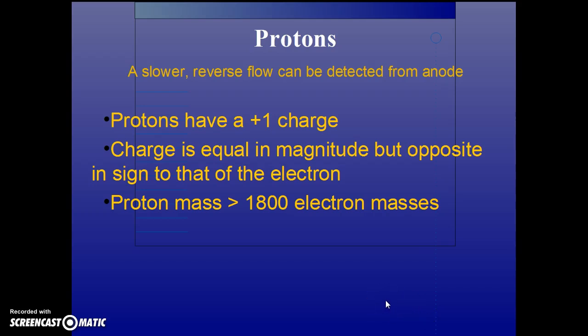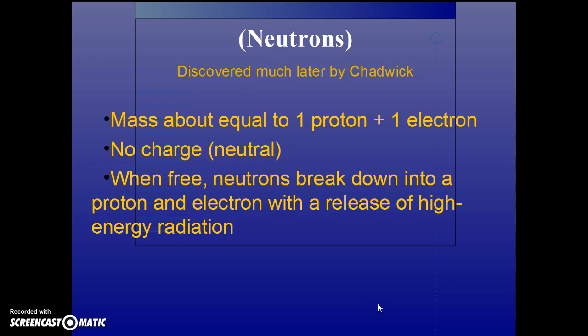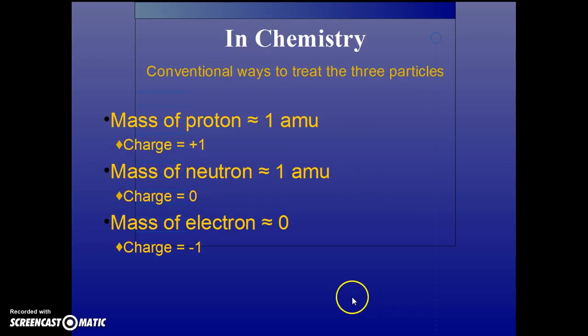Protons, discovered later, have a plus 1 charge, equal in magnitude to the electron minus 1, but opposite in sign. The proton mass is almost 2,000 times heavier than the electron. Later, the Chadwick experiments showed the existence of neutrons in the atom that are equal in mass to that of the proton plus the electron, but without any charge. That's why they were so hard to find. The conventional way to treat the three particles in chemistry: mass of proton is 1, mass of neutron is 1, mass of electron is 0. The charges: proton plus 1, neutron 0, electron minus 1.